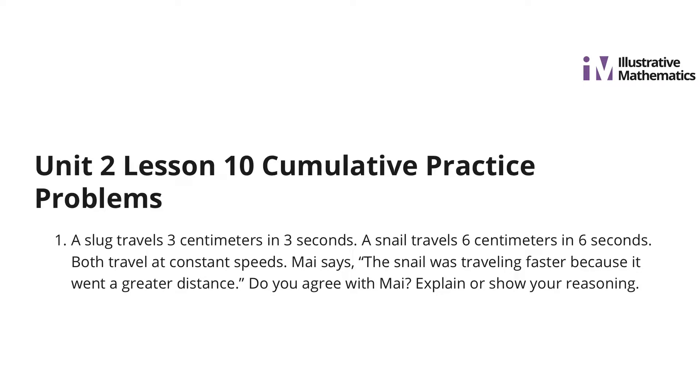A slug travels 3 centimeters in 3 seconds. A snail travels 6 centimeters in 6 seconds. Both travel at constant speeds. Mai said the snail was traveling faster because it went a greater distance. Do you agree with Mai? Explain or show your reasoning.